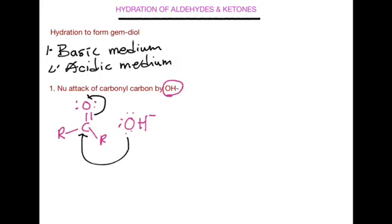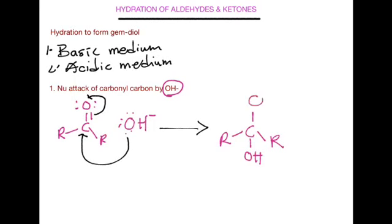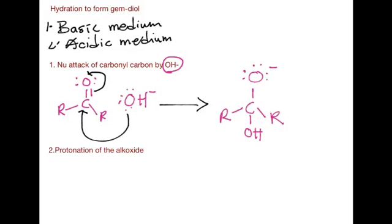The result is that we have our R groups bonded to the carbon, a hydroxide group attached to the carbon, and our oxygen with a negative charge carrying three lone pairs — this is the alkoxide intermediate. The second step under the basic medium is the protonation of this alkoxide.